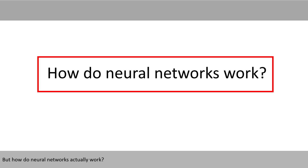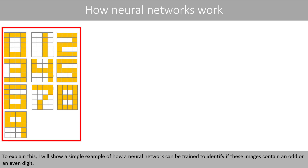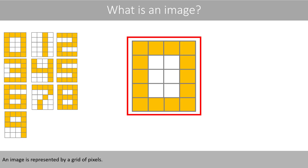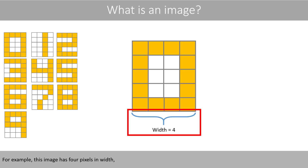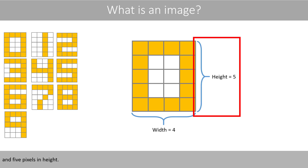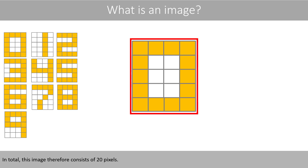But how do neural networks actually work? To explain this, I will show a simple example of how a neural network can be trained to identify if these images contain an odd or an even digit. An image is represented by a grid of pixels. For example, this image has 4 pixels in width and 5 pixels in height, so in total this image consists of 20 pixels.